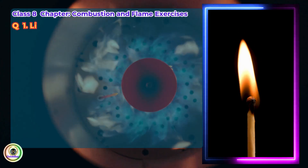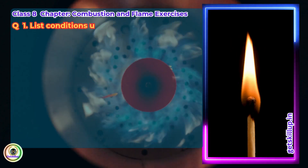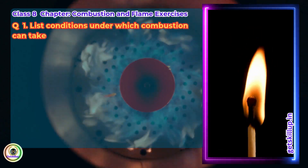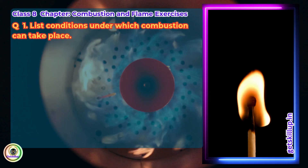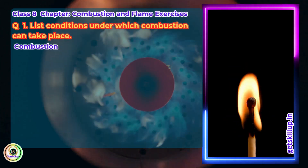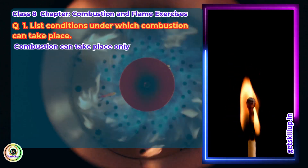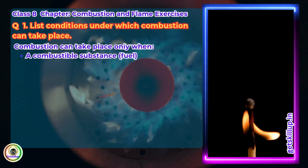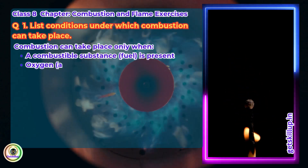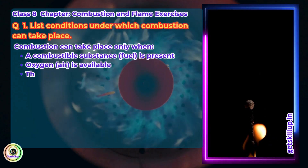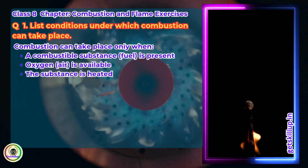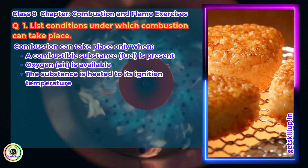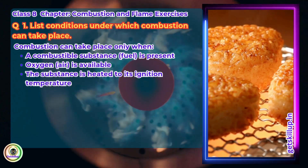Exercises. Question 1: List conditions under which combustion can take place. Answer: Combustion can take place only when a combustible substance (fuel) is present, oxygen or air is available, and the substance is heated to its ignition temperature.